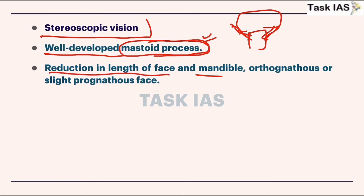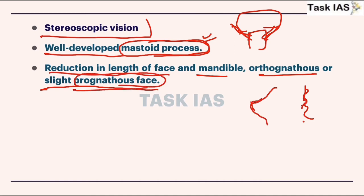There is reduction in length of face and mandible. The face is orthognathous or slightly prognathous — the face is very flat and this prognathism part is reduced. Sometimes there is presence of a prognathous face; as discussed in racial features, small prognathism is observed in the Negrito race. So mostly orthognathous but sometimes prognathous face is observed.